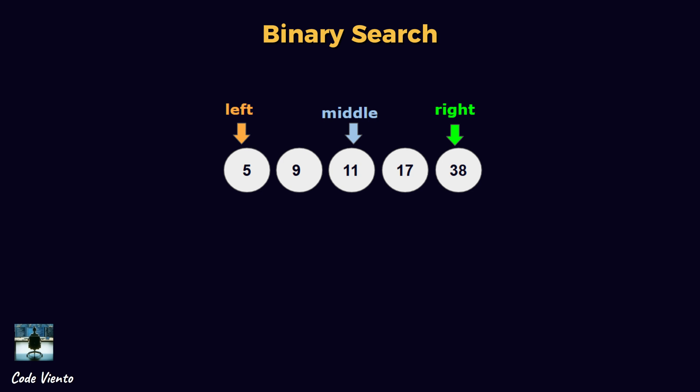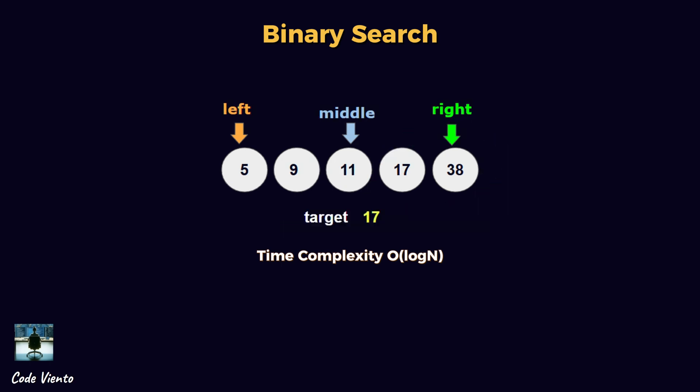Binary search is a classic algorithm that works on sorted arrays. It repeatedly divides the search interval in half. You start by comparing the target value with the middle element of the array. If the target matches, you found it. If the target is less than the middle element, you search the left half. If greater, you search the right half. The process continues until the target is found or the interval is empty, giving you a time complexity of O(log n).